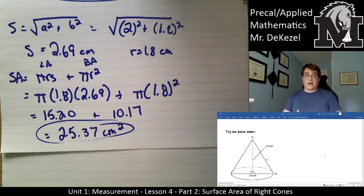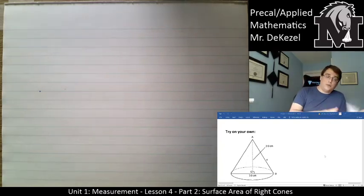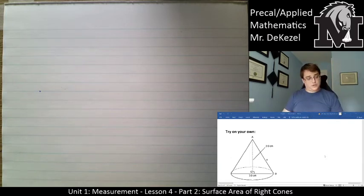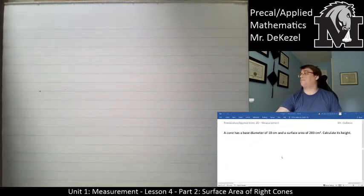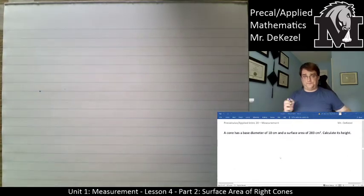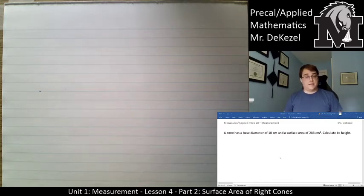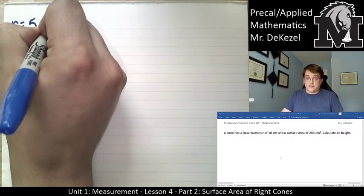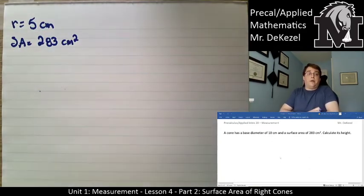If you didn't get that, try to look back and see where you went wrong. We'll move on to another question, and then there's a try-it-on-your-own after that. Then you can do the do-nows in the booklet. A cone has a base diameter of 10 centimeters and a surface area of 283 centimeters squared — calculate its height. We have to work backwards from the surface area.